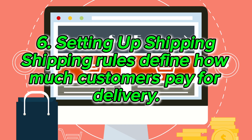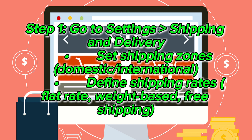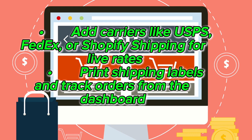Setting up shipping: Shipping rules define how much customers pay for delivery. Go to Settings > Shipping and Delivery. Set shipping zones (domestic, international) and define shipping rates (flat rate, weight-based, or free shipping). Add carriers like USPS, FedEx, or Shopify Shipping for live rates, print shipping labels, and track orders from the dashboard.